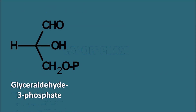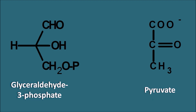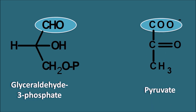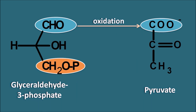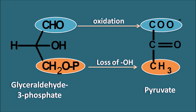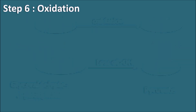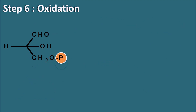Next is the payoff phase, where glyceraldehyde-3-phosphate is converted into pyruvate. The aldehyde in glyceraldehyde-3-phosphate is finally converted to carboxylic acid — one of the steps is oxidation. Additionally, CH2OP in glyceraldehyde-3-phosphate is converted to CH3, meaning the hydroxyl group is lost. Keeping these two changes in mind, we can follow the next five steps of the payoff phase. Step 6 is the oxidation.